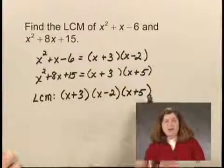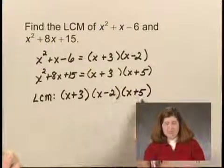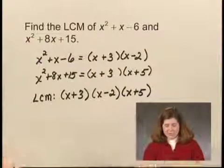So the least common multiple is x plus 3, x minus 2, times x plus 5.